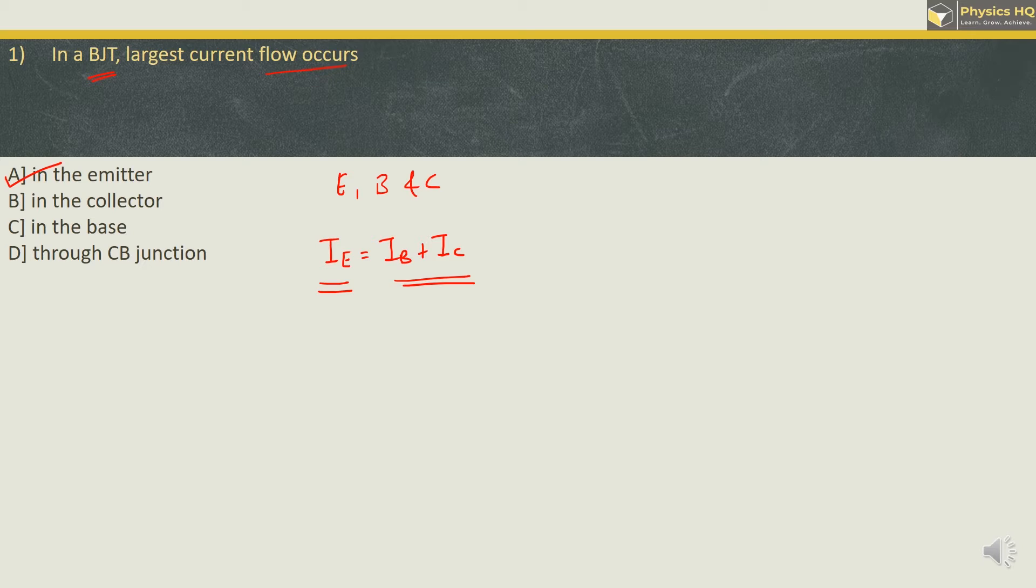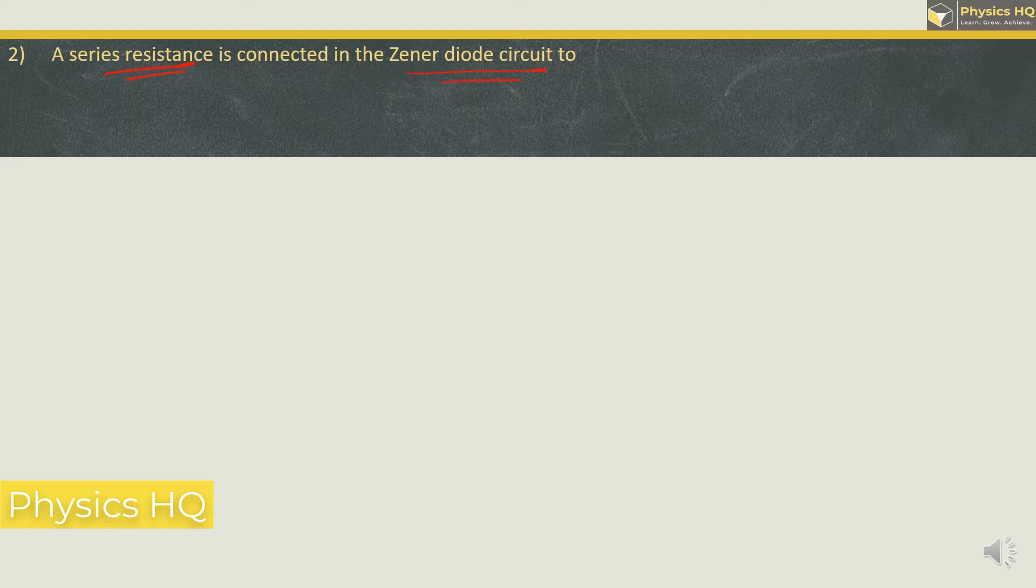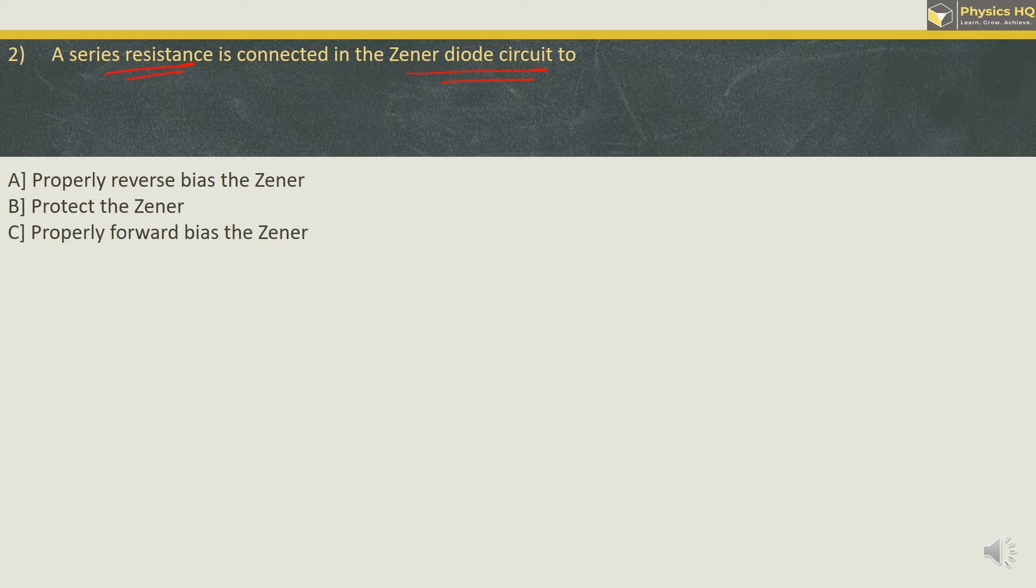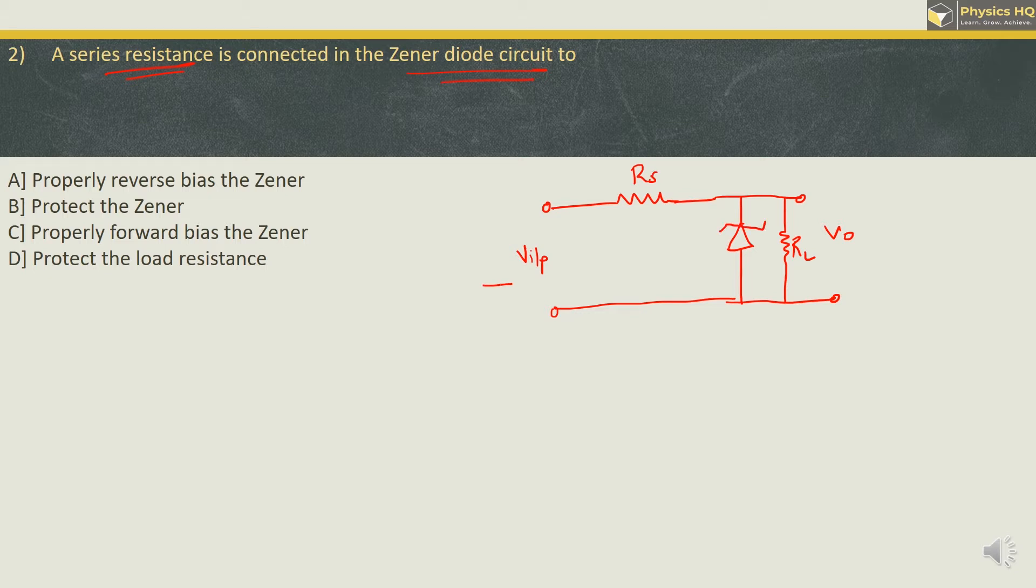Let us go ahead to the next MCQ. A series resistance is connected in the Zener diode circuit to properly reverse bias the Zener, or protect the Zener, properly forward bias the Zener or protect the load resistance. So let me draw the circuit diagram over here. Now here if you can see we got an input voltage from here. We got output voltage taken out from this load resistance. And to this load resistance the Zener diode is connected in reverse bias. So Zener diode is already in reverse bias. And this series resistance over here is supposed to limit the amount of current which will flow through this Zener diode. So basically this series resistance is connected to protect the Zener diode. Hope you all understood this.